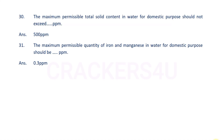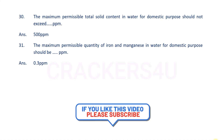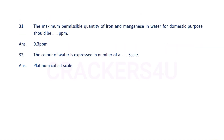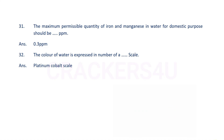Question number 31: The maximum permissible quantity of iron and manganese in water for domestic purpose should be 0.3 ppm. The color of water is expressed in number of a platinum cobalt scale.